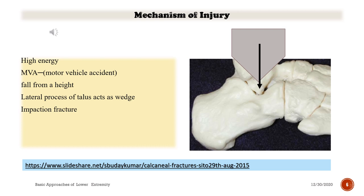Mechanism of injury: high energy trauma, such as a motor vehicle accident or fall from a height. The lateral process of the talus acts as a wedge, producing an impaction fracture. See the figure that depicts the mechanism.